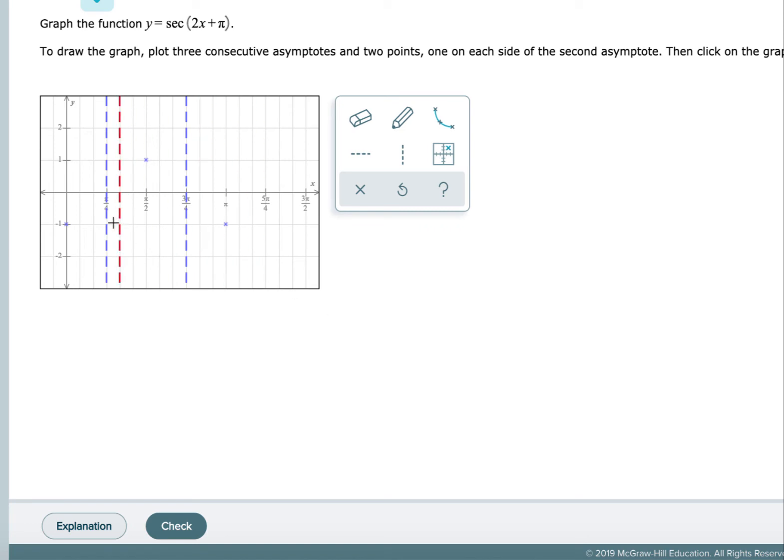So those are my asymptotes. And then if I count here that I went from π over 4 to 3π over 4, so I'm moving over two more, that will take me to 5π over 4. And they ask, in graphing this problem, to draw the graph, plot three consecutive asymptotes, and two points on each side. So we have that now. We have our 1, 2, 3 asymptotes.